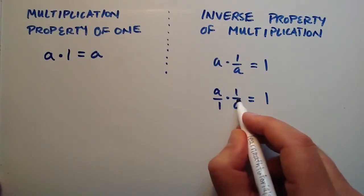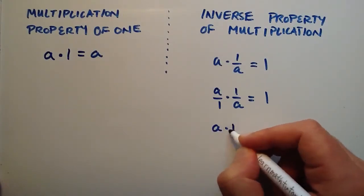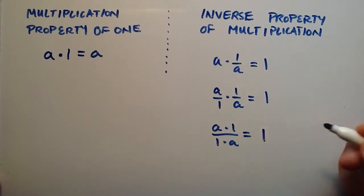and then put that over the denominator times the other denominator. So this simply becomes a times 1 over 1 times a. And that equals 1.